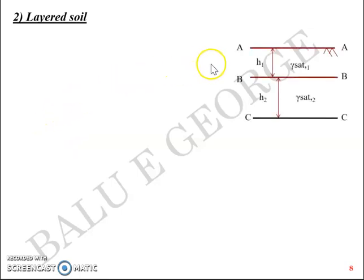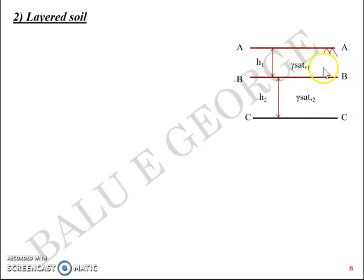Now we'll try to see a layered soil. You have level A, level B, and level C. Between A and B you have layer number 1 whose height is h1 and has a soil whose unit weight is gamma saturated 1. Likewise, below that you have layer BC or layer 2 whose height is h2 and the soil has a unit weight of gamma saturated 2.